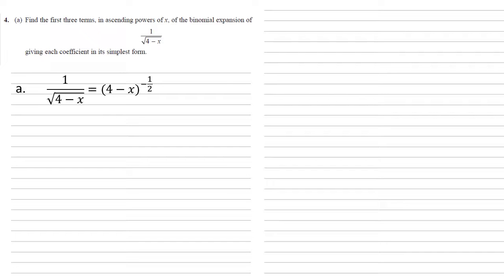Now to find the binomial expansion, we need our brackets in the form of 1 plus or minus. We've got a 4 here, so we're going to divide this 4 out. But because the bracket is to the power of minus a half, when we bring out the 4, the 4 also has to be to the power of minus a half. But 4 to the power of minus a half is 1 over square root of 4, which is a half. So we've now changed this into a half times 1 minus x over 4 to the minus a half.